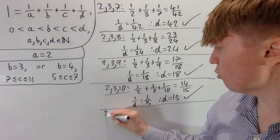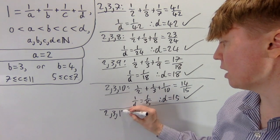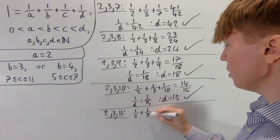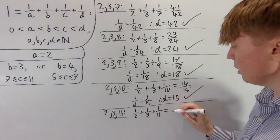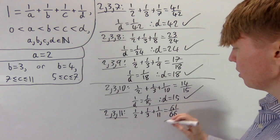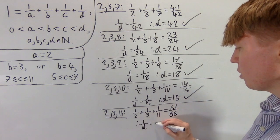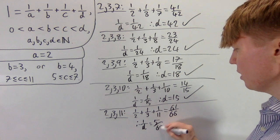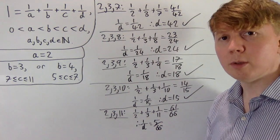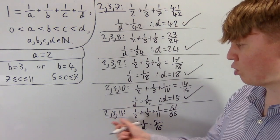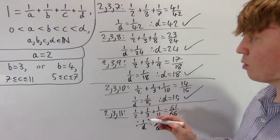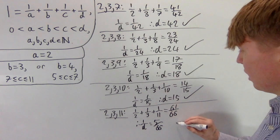Now (2, 3, 10): one half plus one third plus one tenth gives us a sum where one over d is the remaining fraction — and we get d equals 15, giving (2, 3, 10, 15). Something interesting happens when we try c equals eleven. One half plus one third plus one eleventh equals 61 over 66. So one over d would have to be 5 over 66, meaning d equals 66 over 5 — which is not an integer. So (2, 3, 11) doesn't work, and we've found exactly four solutions when b is three.